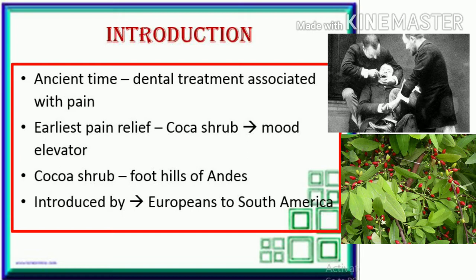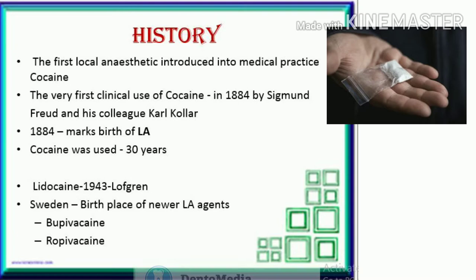In history, the first local anesthetic introduced into medical practice was cocaine. The very first clinical use of cocaine was in 1884 by Sigmund Freud and his colleague Karl Koller. This marks the birth of local anesthesia — cocaine was used for about 30 years.